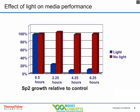Light will damage your media. In this experiment, cell culture media without phenol red was exposed to light for half an hour, two and a quarter, four and a quarter, or six and a quarter hours. You can see the spontaneous reduction in growth potential of the media using SP2 cells. Exposure to light will damage the growth potential of your media.